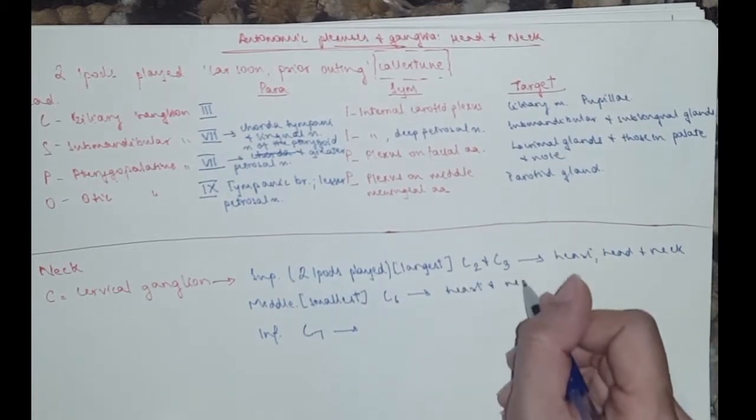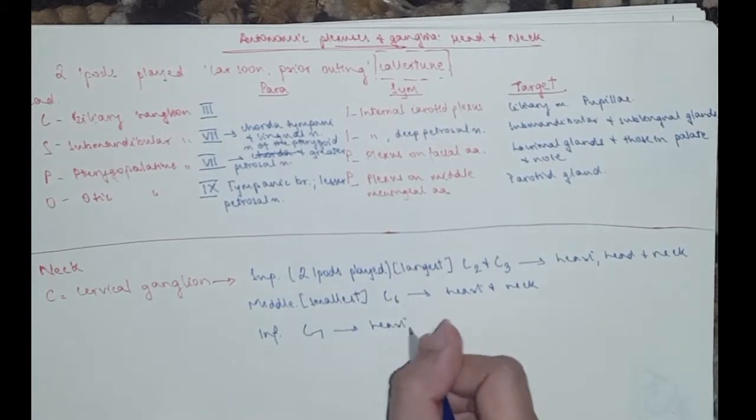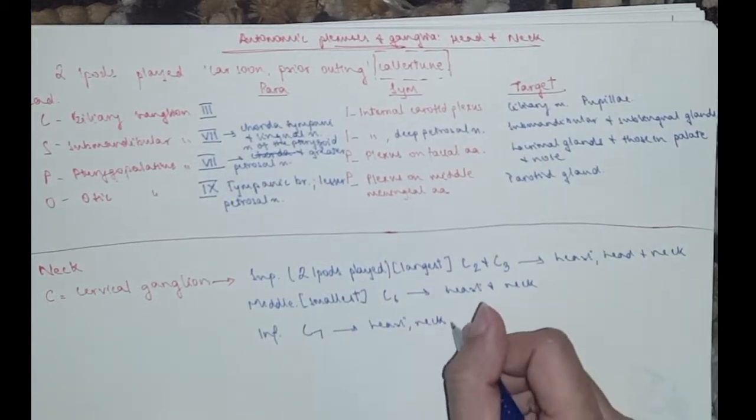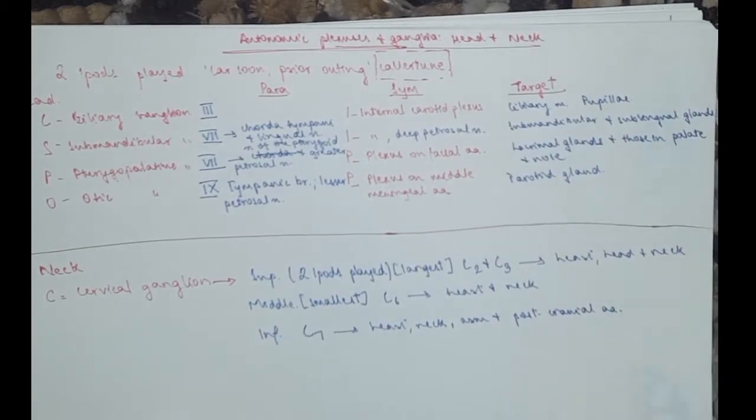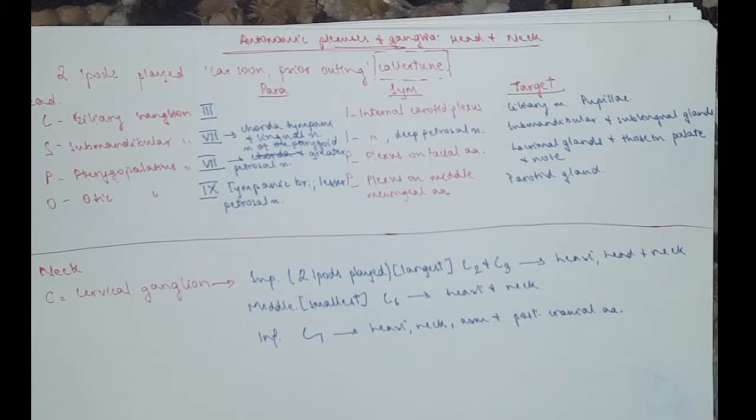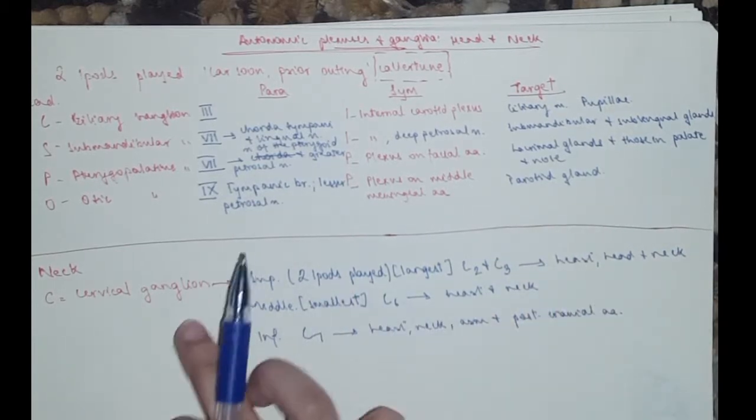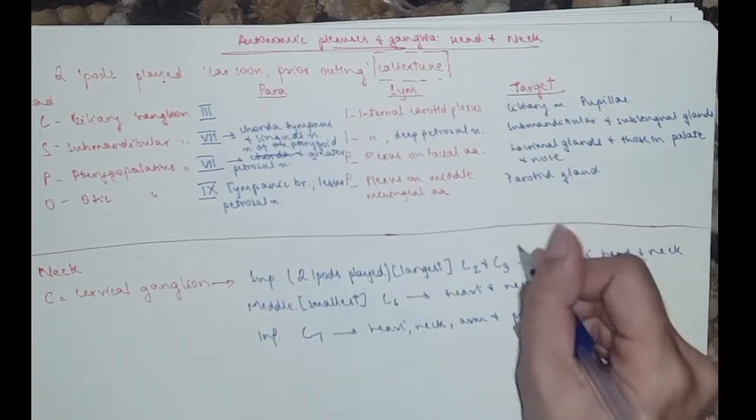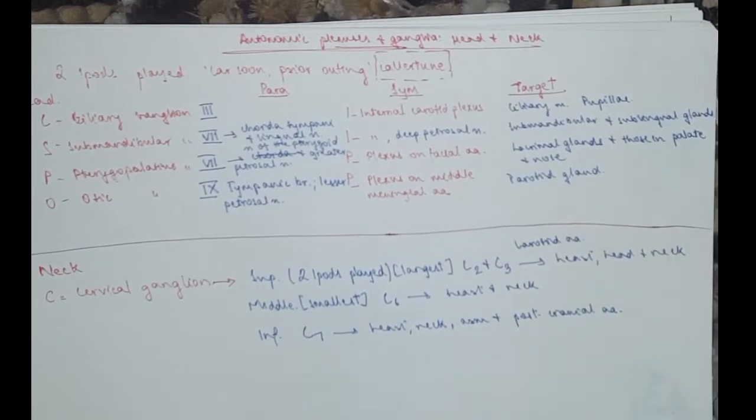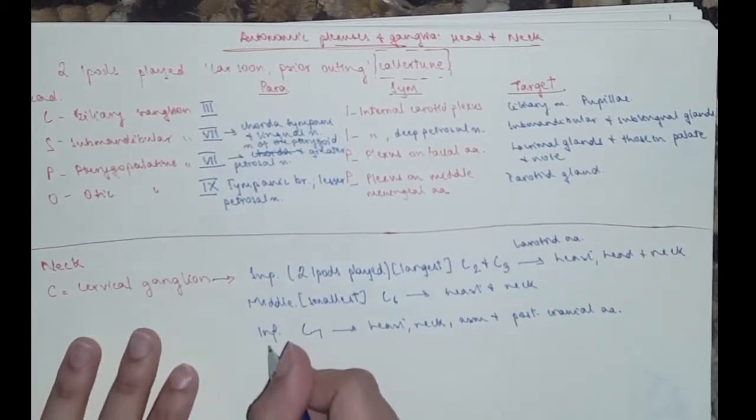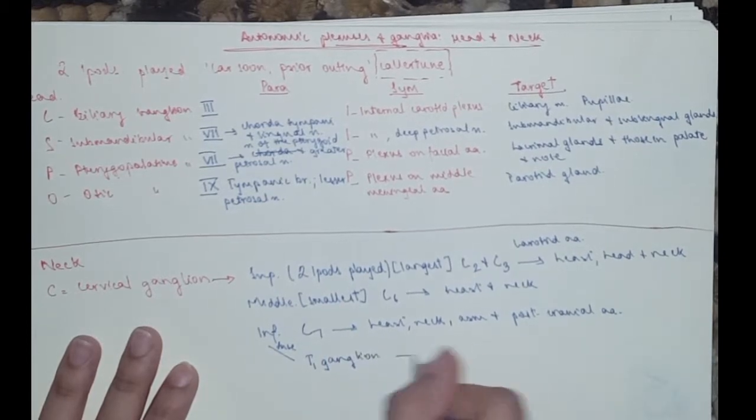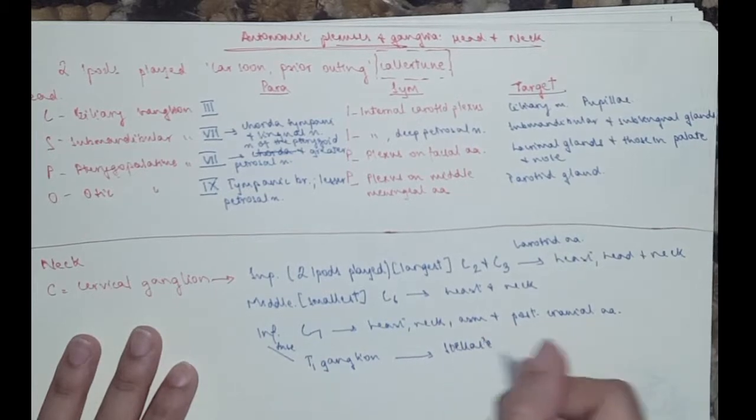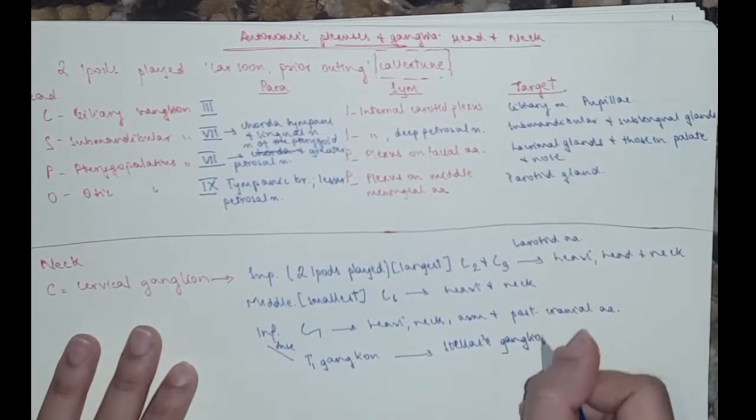Then you need to know the targets. C7 and neck. This one would be the heart, neck, lower neck because C7, arm and posterior cranial artery. You need to know two more things. About the superior, you need to know that it leads to, from the ganglion it goes to the carotid artery and then to the plexus. So it uses the carotid artery as a transport system. And for the inferior, you need to know that it may be fused. It can fuse with the T1 ganglion to form the stellate ganglion.